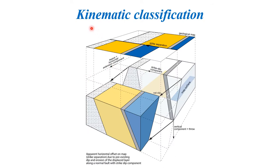Now we will study the kinematic classification. The first term is slip — taken as the direction of movement along the hanging wall relative to the foot wall. The displacement vector connecting originally coincident points on opposite sides of the fault plane is called net slip. These originally coincident points are known as piercing points in geology.